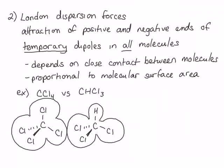Keep in mind that this trend in boiling points cannot be predicted using dipole-dipole forces. The molecular dipole of carbon tetrachloride is zero, while the molecular dipole for chloroform is small and points in the direction of the chlorines. Based on dipole-dipole forces alone, we would expect chloroform to have higher boiling points — so clearly something else is going on, and that is London dispersion forces, predicted by the surface area of the molecule.